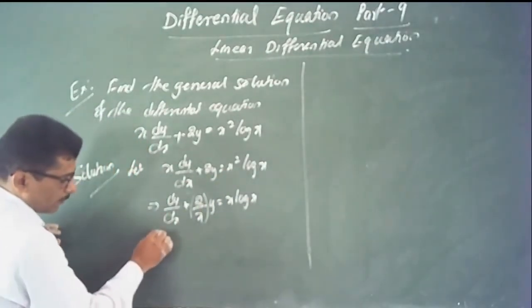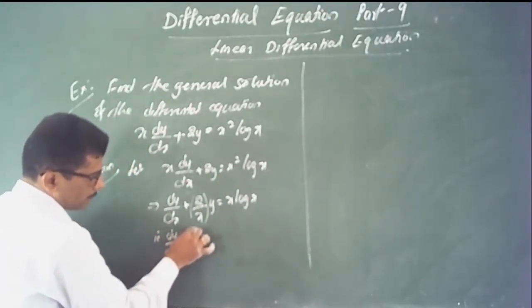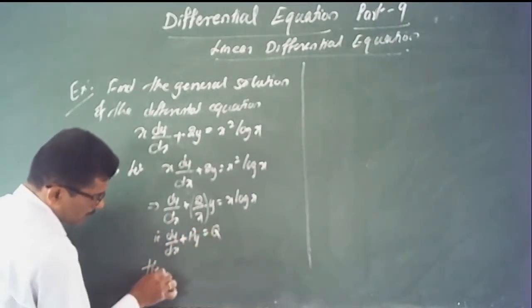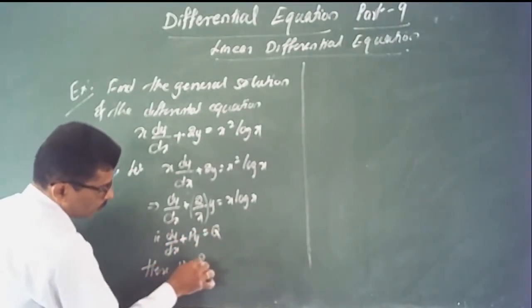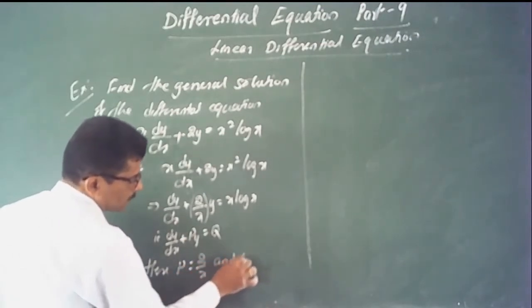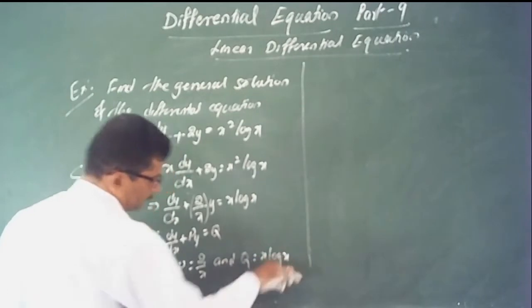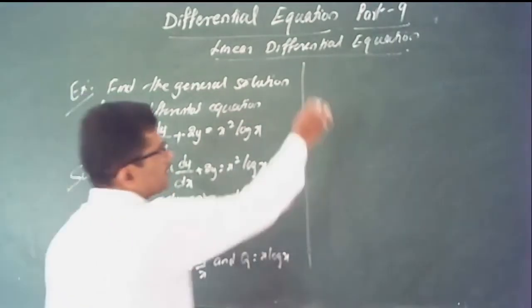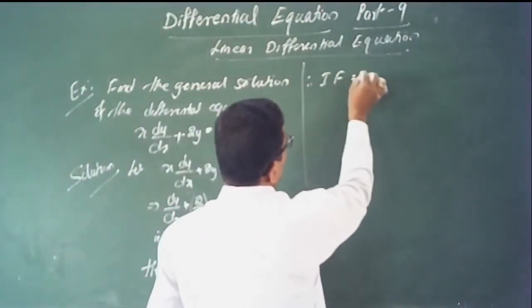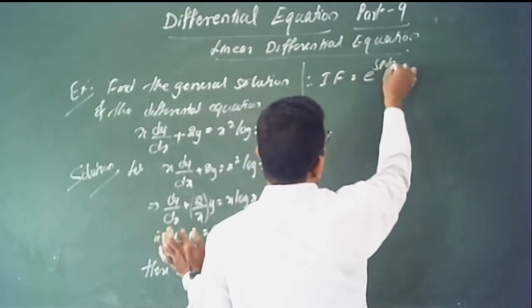This is in the form dy/dx plus p times y equals q. Here, the value of p is equal to 2/x and the value of q is equal to x times log x.